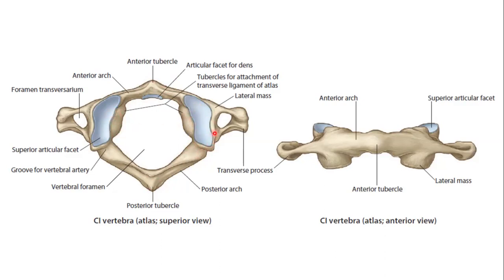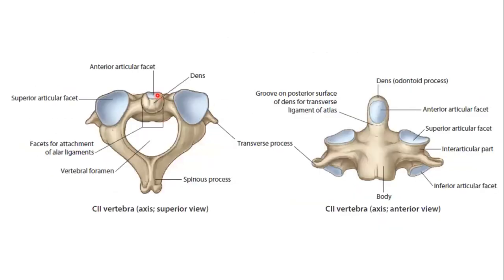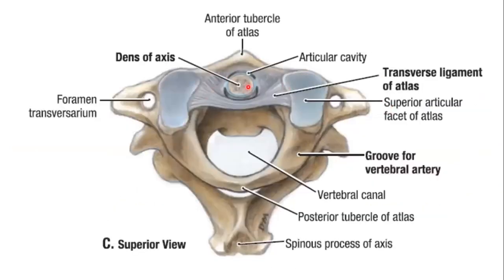There is an articular facet which is elongated and forms the joint with the occipital condyle of the occipital bone, forming the atlanto-occipital joint. On the anterior surface of the anterior arch, there is an articular facet for the dens. This articular facet forms a joint with the second cervical vertebra — the dens. The dens fits into this anterior tubercle of the atlas, and posterior to the dens is the transverse ligament of the atlas.